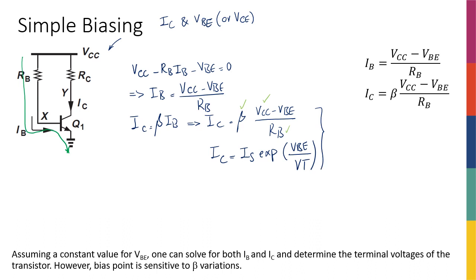So with the system of two equations, two unknowns, the two unknowns being IC and VBE, I can actually find both of them. So that's how I actually set the IC and VBE.